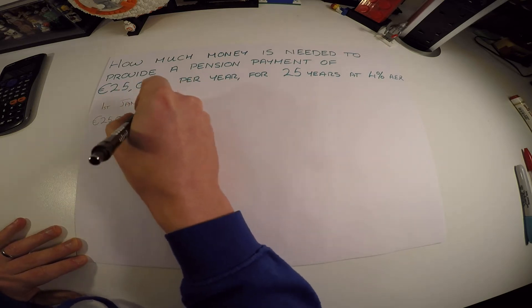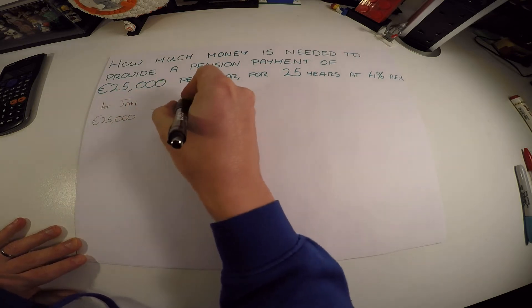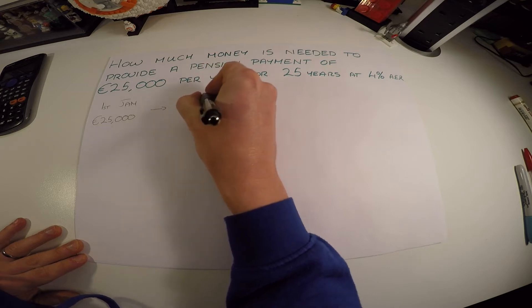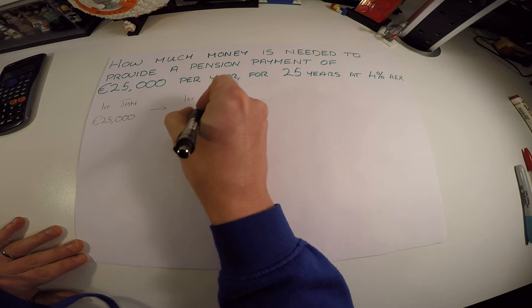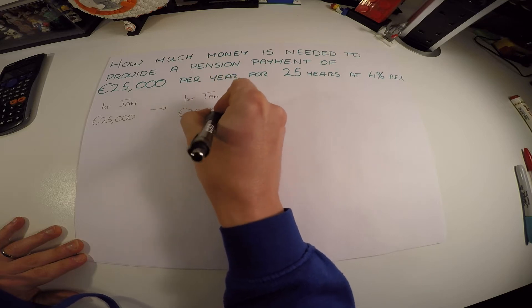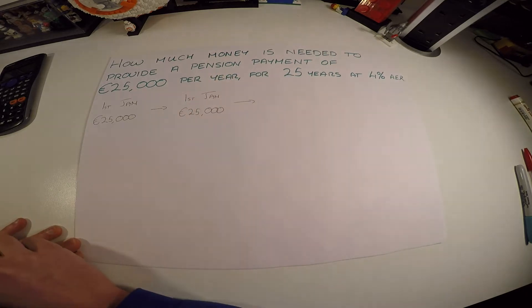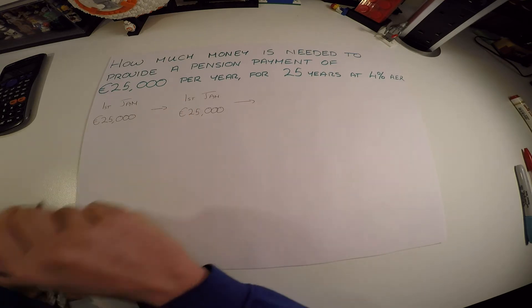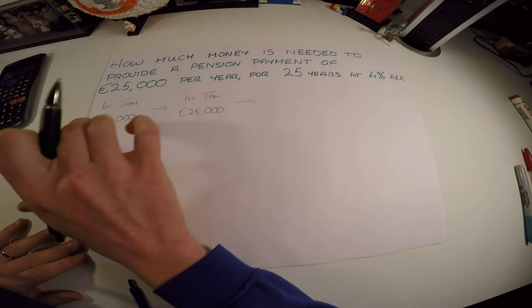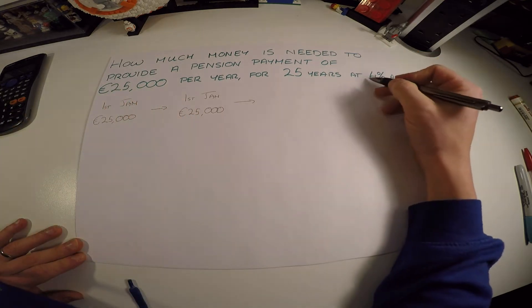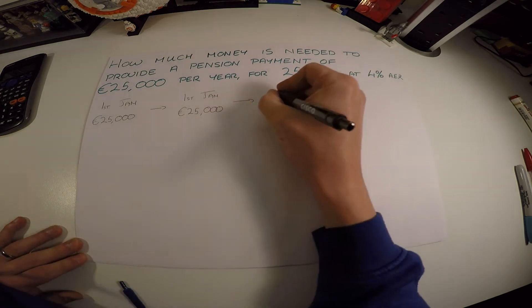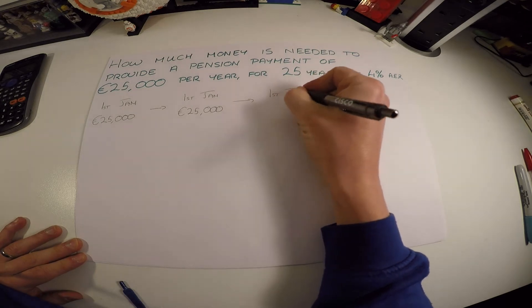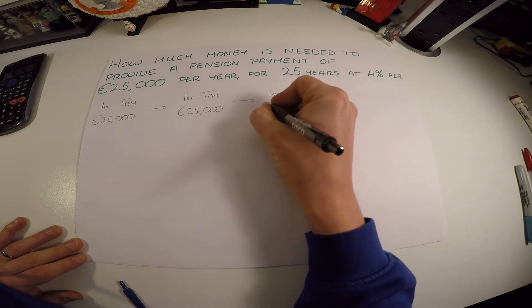Now your fund's going to be depleted by that much, and the following year then, on the 1st of January again, you're going to take out another 25,000, and so on. This is going to go on. So your fund's going to deplete, but that fund that's sitting there is going to constantly be earning a yearly interest rate of 4%.